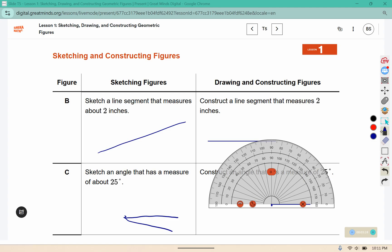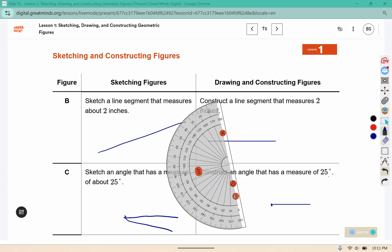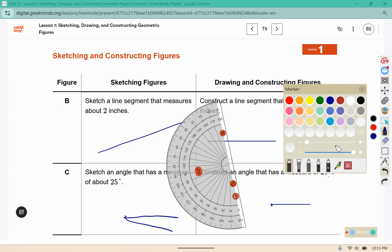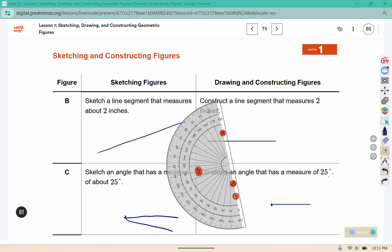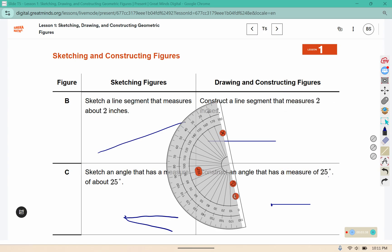And then using your straight edge, either the edge of the protractor or a ruler, you are going to connect the corner here with that mark that we made at 25.